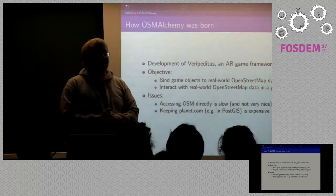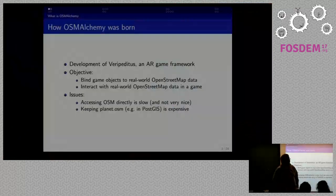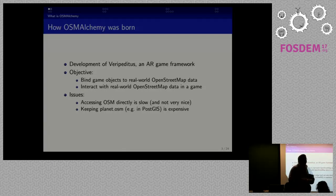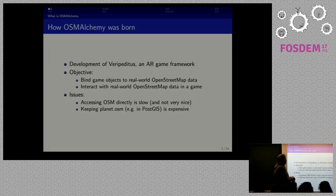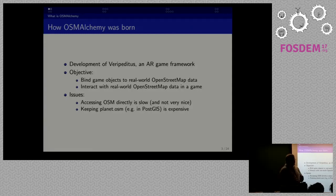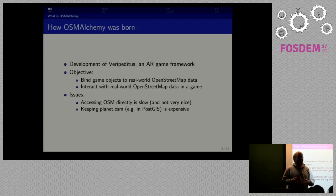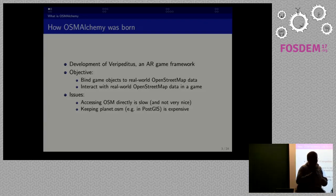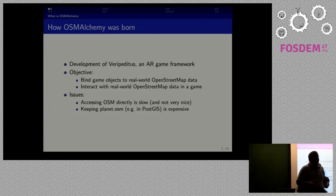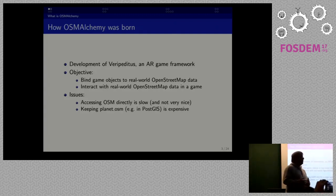So when we developed Veripeditus, which is a framework for developing augmented reality games — you may know Pokémon Go or Ingress — we started developing a framework that helps at creating such games. We wanted to bind game objects like items and non-player characters in this framework to OpenStreetMap objects, so game developers could let items and characters spawn not just at given geolocations but also at objects that are tagged on OpenStreetMap.